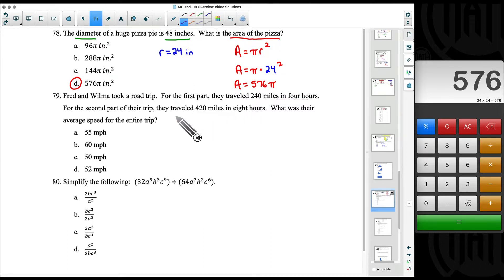The way to find the average speed for the entire trip: take the total distance, and that total distance is going to be 240 plus 420. So 240 plus 420, their total distance is 660 miles. Take your total distance and divide by the total time. Four hours and eight hours, we want to divide by a total time of 12 hours.